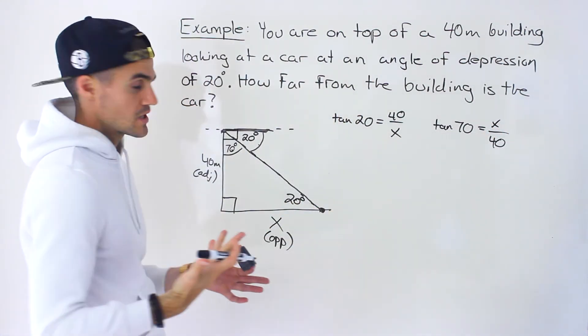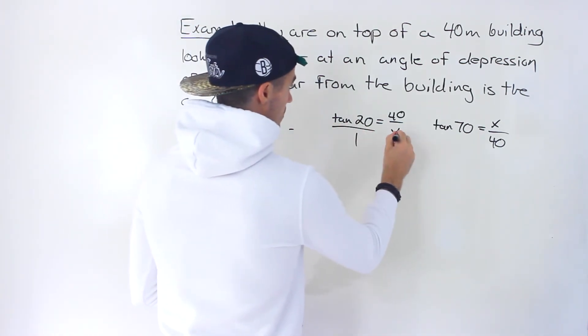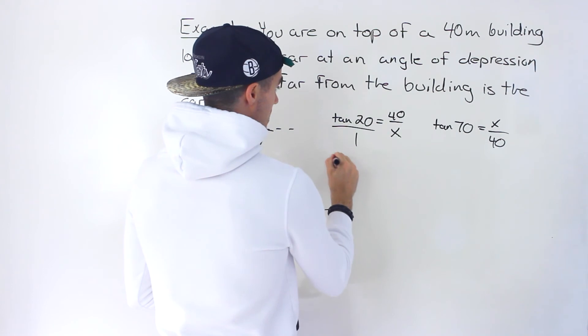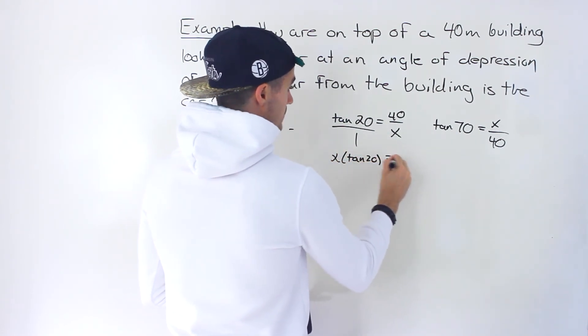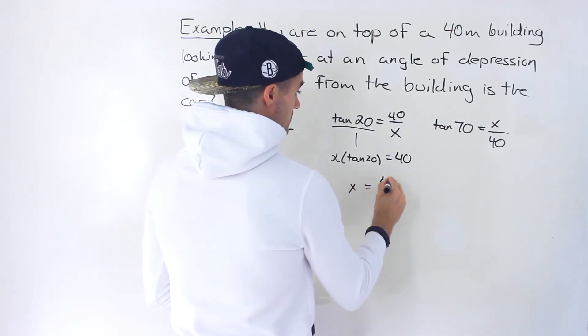All right, so two different ratios that you can set up to solve for x. Now, if we solve for x here, cross multiply, so x times tan 20 would equal 1 times 40, then we would divide both sides by tan 20 to get the x by itself.